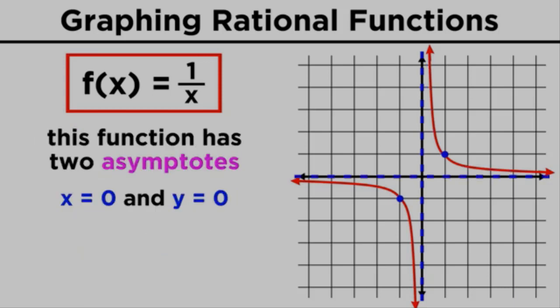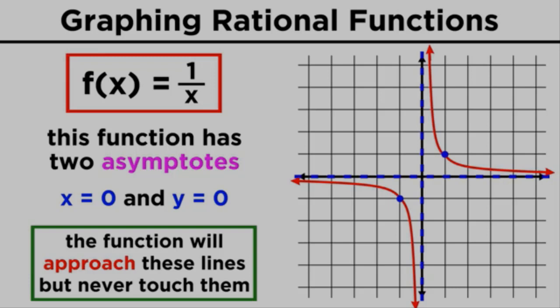What we can say about this function is that it has two asymptotes that can be represented by x equals zero and y equals zero. These are lines that the function approaches, getting closer and closer, but never quite touching.